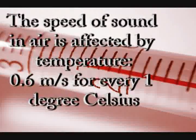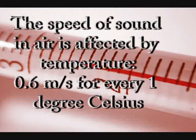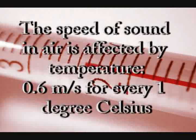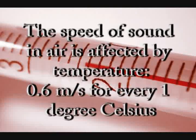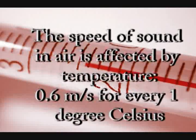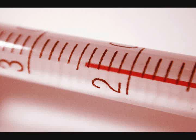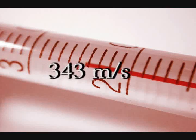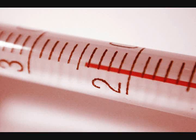This pressure variation that you feel is called a sound wave. The speed of sound in air depends on the temperature, with the speed increasing by about 0.6 meters per second for each 1 degree Celsius increase in air temperature. For example, at room temperature, or 20 degrees Celsius, sound moves through air at sea level at a speed of 343 meters per second.